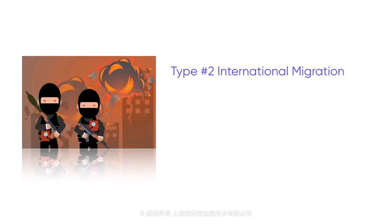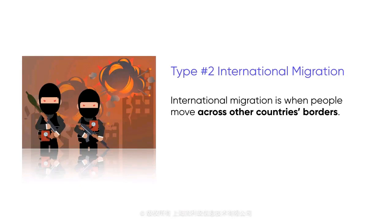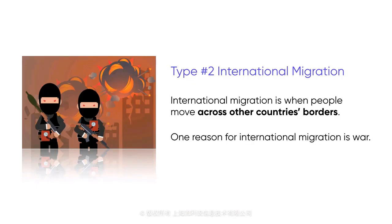International migration is when people move across other countries' borders. Sometimes this migration happens over a short distance — for example, someone moves from Germany to France. Other times, people move to an entirely different continent. One reason for international migration is war. A recent example would be the Syrian refugee crisis in 2017. Due to civil war in Syria, over 6 million people were forced to relocate to Turkey, Egypt, and Europe.